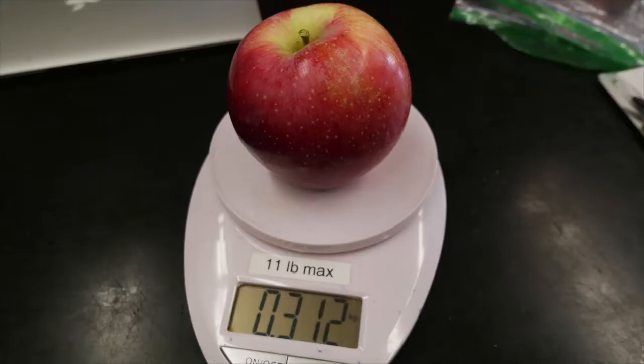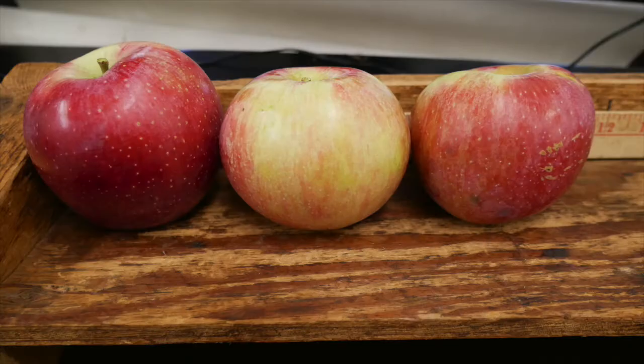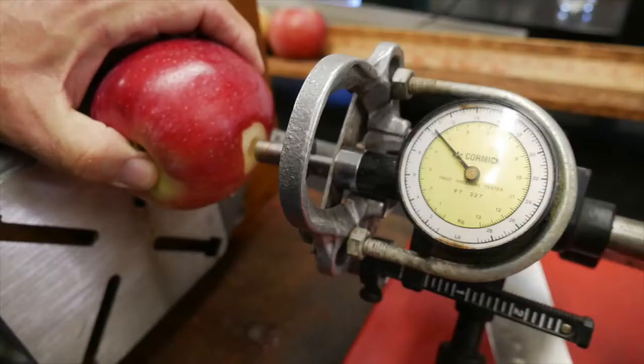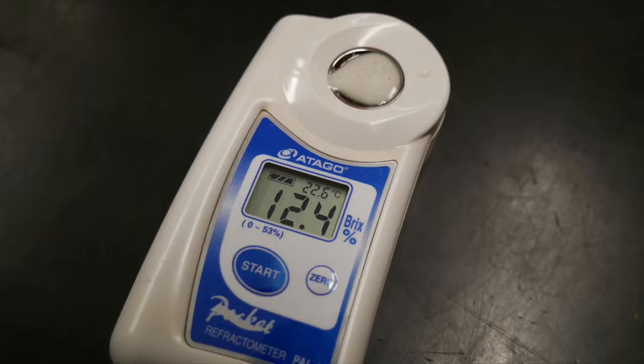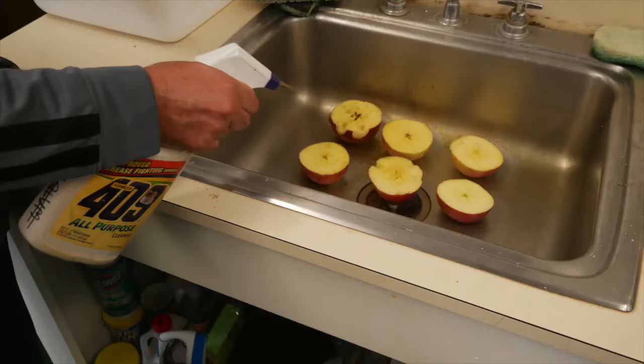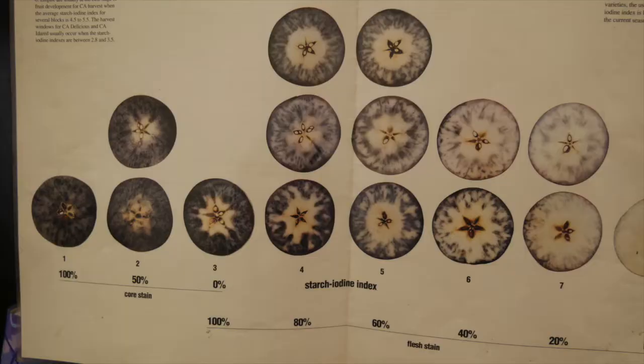Additional lab measurements include fruit size including weight and diameter, percent red skin color, fruit flesh firmness, soluble solids also known as Brix, and starch index.